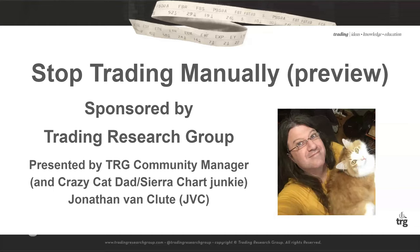This is being sponsored by Trading Research Group, TRG, and I am the community manager of TRG. I'll let you figure out which one of those two is me in the picture — I'm the one with the bad eyesight. Jonathan Van Kloot, that's my name. Most people call me JVC, certainly in TRG, because it's a lot shorter to type. That's just darn easier and faster for people to reach me.